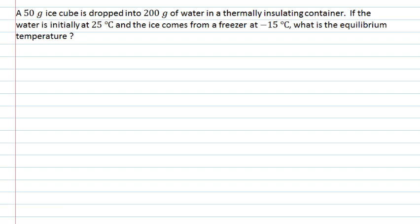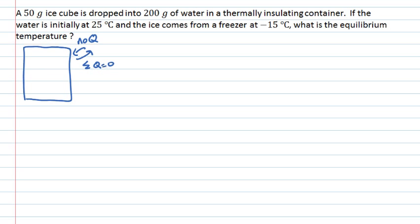This is a calorimetry problem. I've got my thermally insulating container, which basically tells me that no heat is being added to the system or taken away from the system — lost to the environment. That means the sum of all heats inside the container must equal zero. I've got some water and a block of ice. The heat is going to flow from the hotter object, the water, into the colder object, the ice, and eventually these two things are going to reach the same temperature — that's what we're trying to find out.